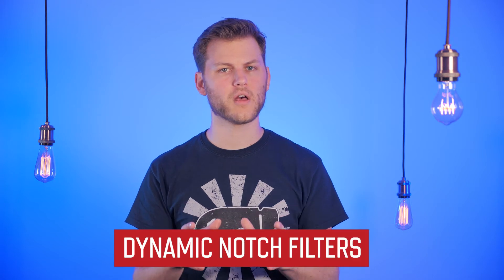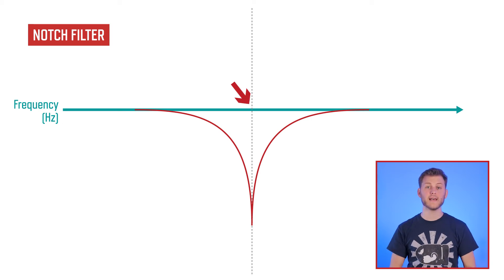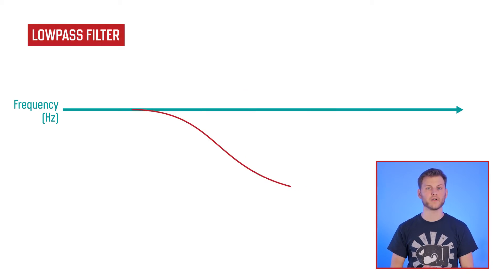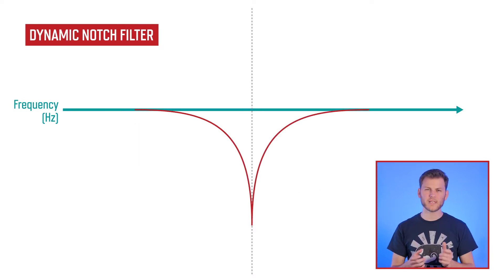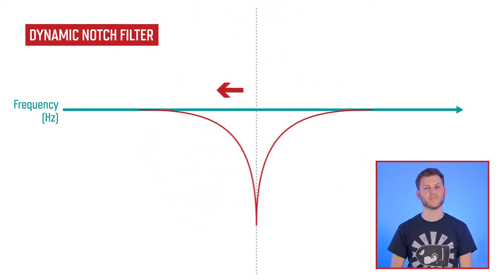RPM filters are specifically designed to track and eliminate the noise coming from your motors. They are actually made of a bunch of dynamic notch filters. But what does this mean? A notch filter eliminates noise around a specific frequency. It is different from a low-pass filter that will reject all the noise above a given frequency. Now, a dynamic notch filter is able to move and follow a frequency.